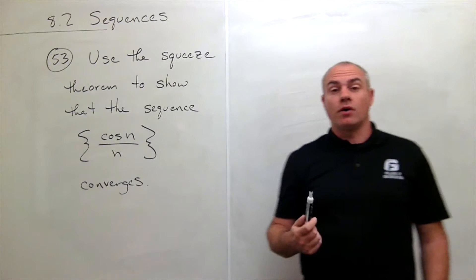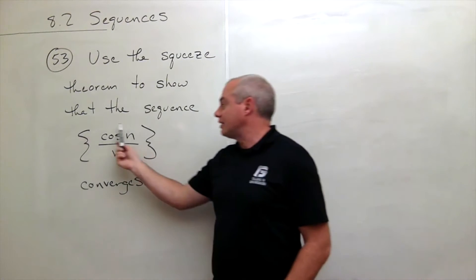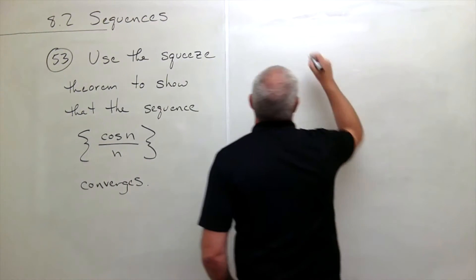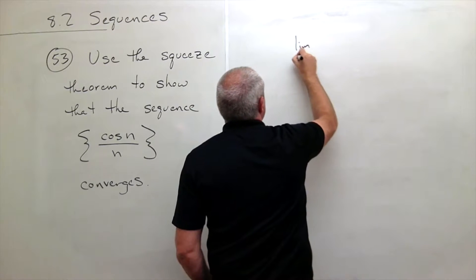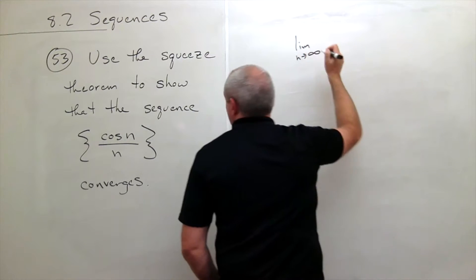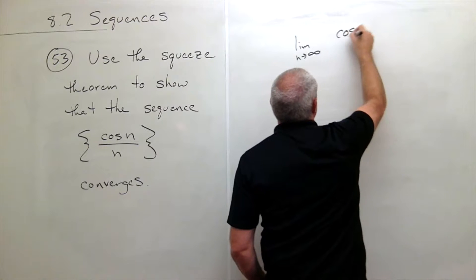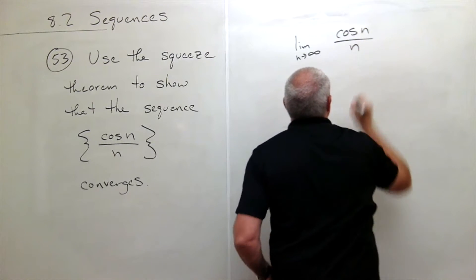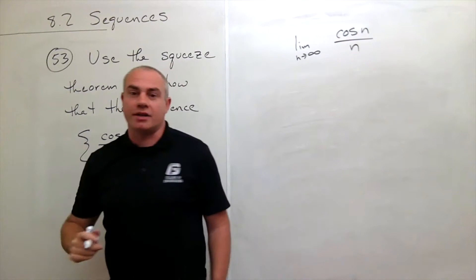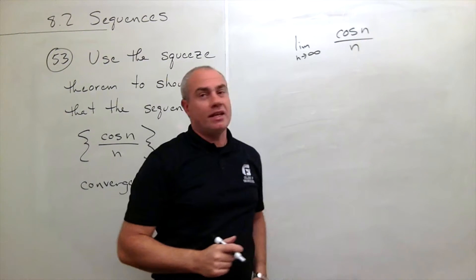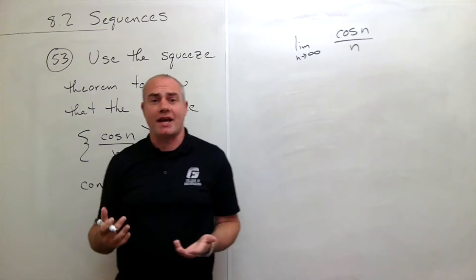All right, so what I'd really like to do is find the limit as n goes to infinity of cosine of n divided by n. The problem here is that cosine of n, when n is some natural number, is quite nasty,